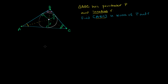Let's think about how we can find the area in terms of the inradius. The inradius looks like the altitude for each of the sub-triangles formed from the incenter. Let's label the incenter I. Then R is the altitude of triangle AIC, R is the altitude of triangle BIC, and R is the altitude of triangle AIB. If we can find the area of each of those triangles and sum them up, we get something in terms of the perimeter and inradius.